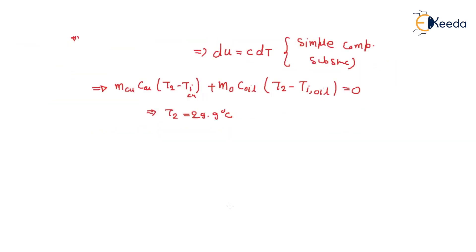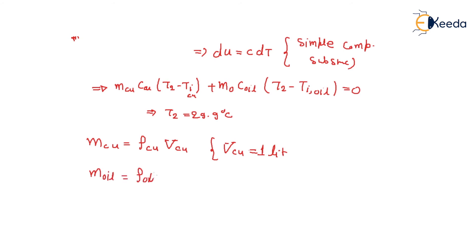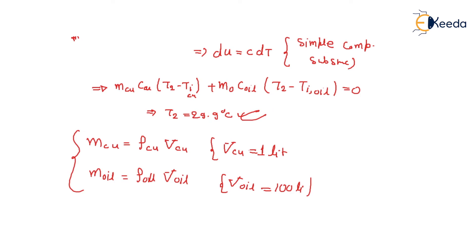To find the mass of copper, use density of copper times volume of copper — the volume of copper is given as one liter. Similarly, mass of oil equals density of oil times volume of oil, and the volume of oil is 100 liters. Put these values in and you can get the final equilibrium temperature.